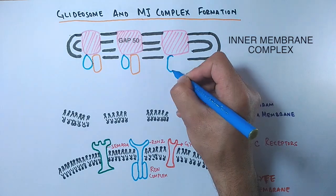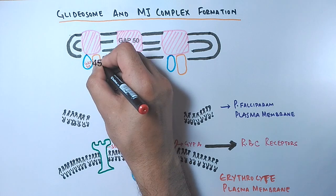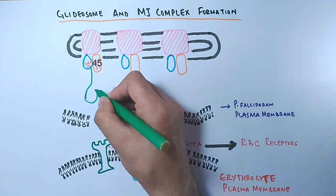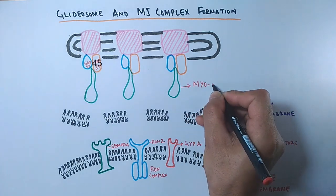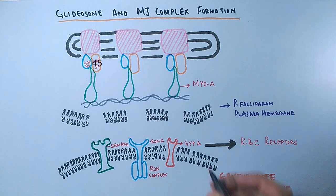The inner membrane complex has encoded proteins in the form of GAP40, GAP50, and also there is a GAP45 protein. And this GAP45 binds myosin A to the inner membrane complex. To provide motility, the myosin head is attached to actin filaments.